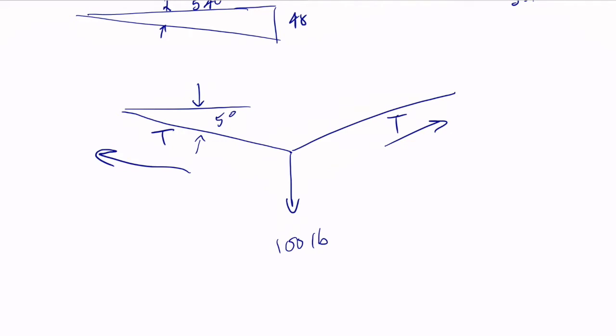Two times tension times sine of 5.1 is equal to 100 pounds. This is your force balance here, and you can very easily see tension is equal to 560 pounds. You solve this equation, you get 560 pounds of tension.